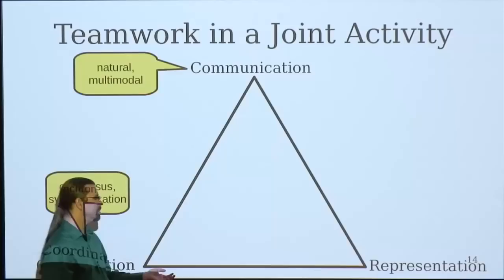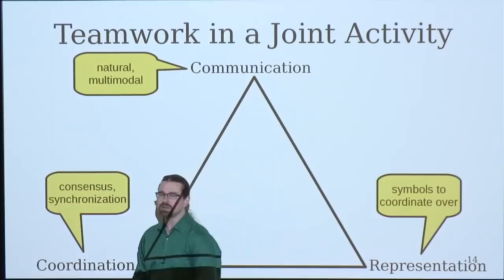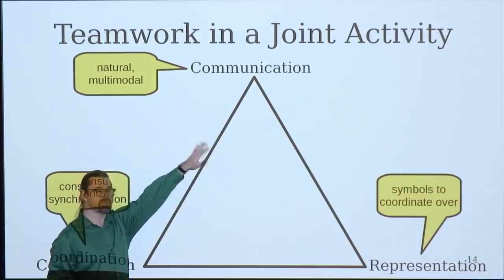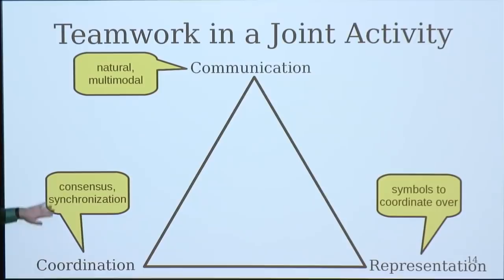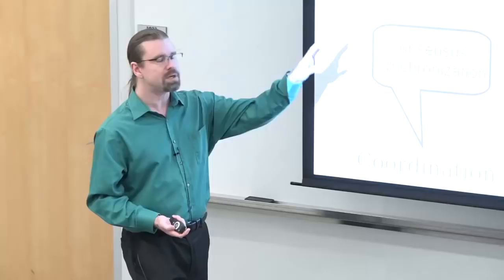Second category is coordination within the team. So this is really about consensus, synchronization, decision-making of the group. The third one then is representation, and here we need a set of symbols, and these symbols are the grounding targets for our communication signals, and the symbols of the representation are what the consensus must be formed over. So we as a team have agreed on a plan or agreed on a goal when we can agree on a set of symbols in our representation. So today I'm going to mention all three of these in the context of three different projects.